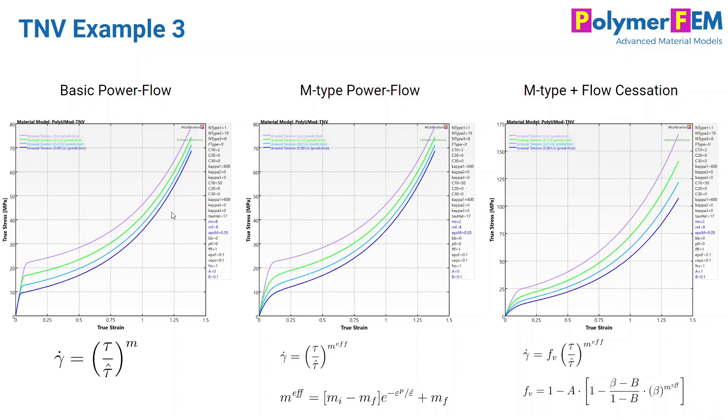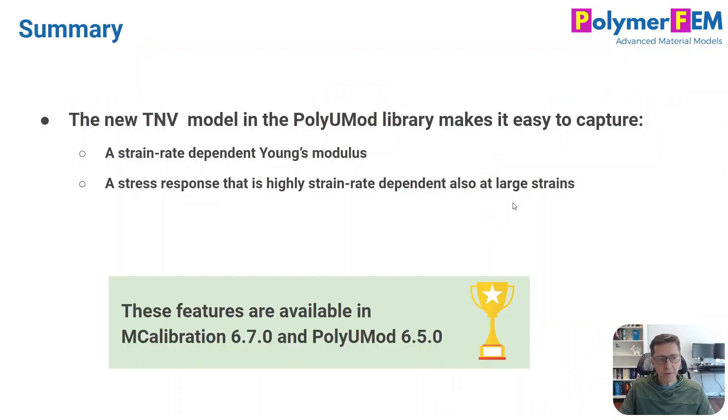So let's summarize the whole idea here, start to finish. Here's the initial power flow model. The two problems I talked about, the modulus wasn't so good always. We can fix that using this m parameter, make it strain dependent. It's an easy fix. And secondly, we turn on the flow cessation and we can make this curve behave slightly different at larger strains. So these two factors together allows you to significantly improve the accuracy in many cases of your material model. So that's really the purpose of this.